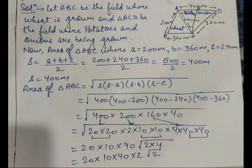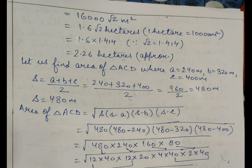Now, 400 is split into 20 into 20 inside the root. 200 is split into 2 into 10 into 10. 160 can be split into 4 into 40, and 40 is written as it is. After making pairs inside the root, we take one number from each pair outside. So 20 into 10 into 40 comes outside, and inside the root 2 into 4 is left. After solving further, we get 20 into 10 into 40 into 2 into root 2.